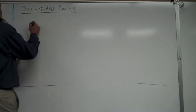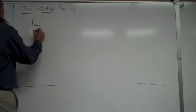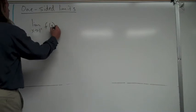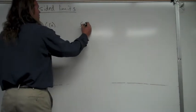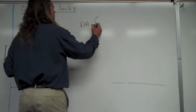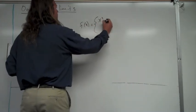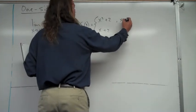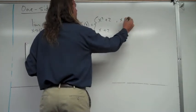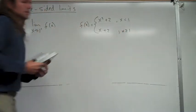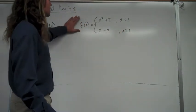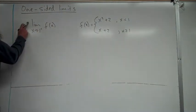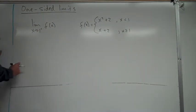Let's find the limit as x approaches 1 from the right of f of x, where f of x is a piecewise function: x squared plus 2 for x less than 1, and x plus 2 for x greater than 1. Since we're approaching 1 from the right, we use the piece that deals with values greater than 1.